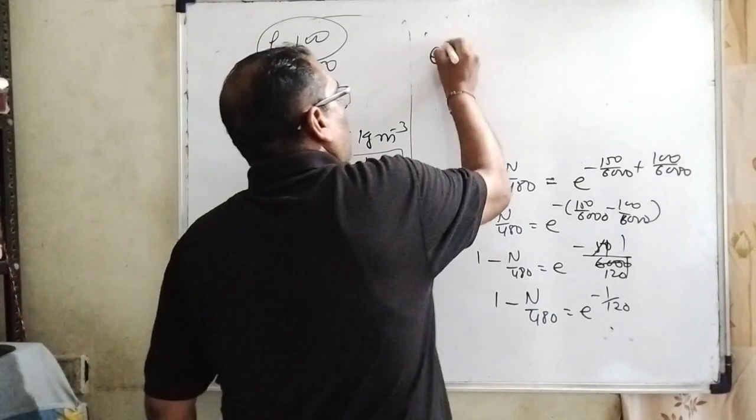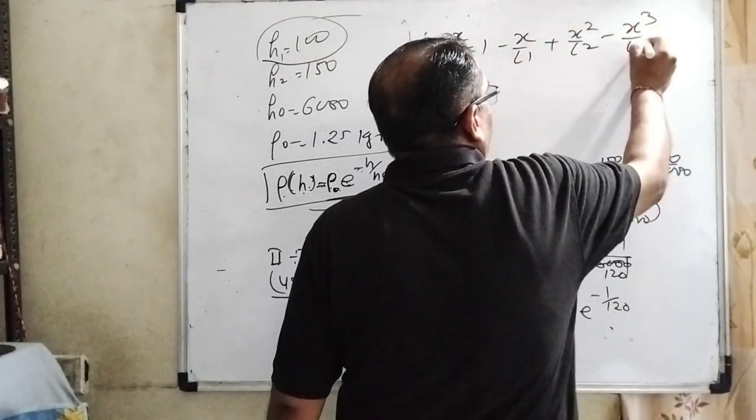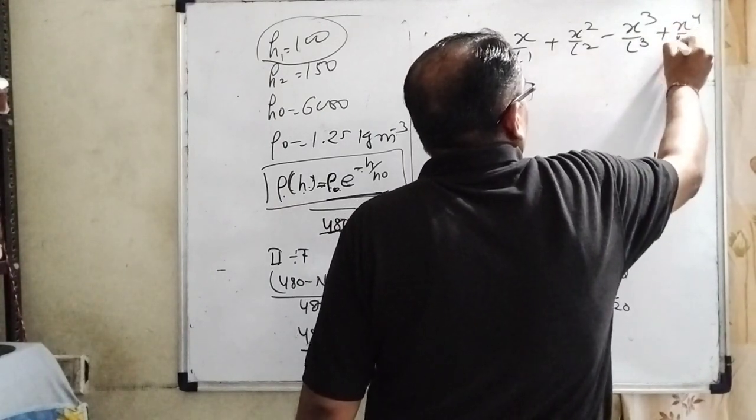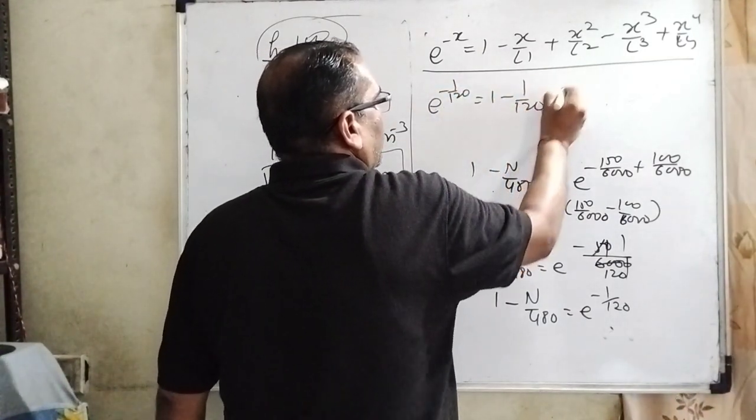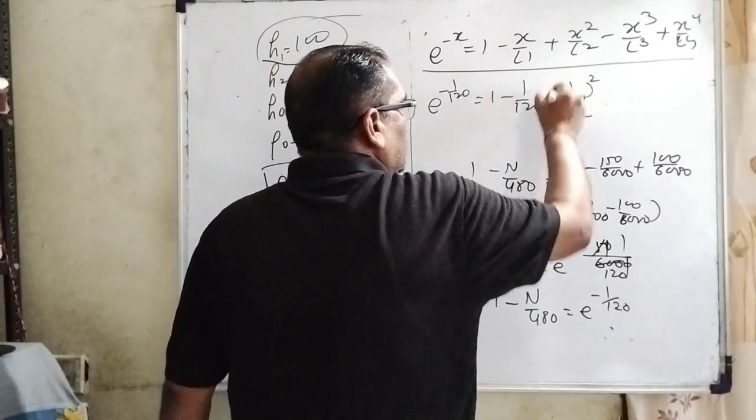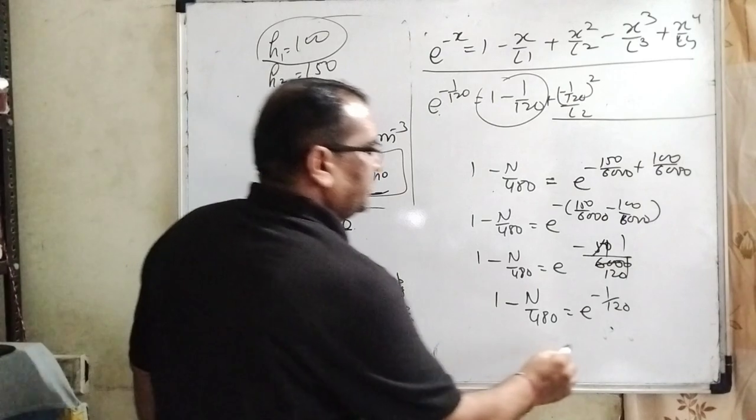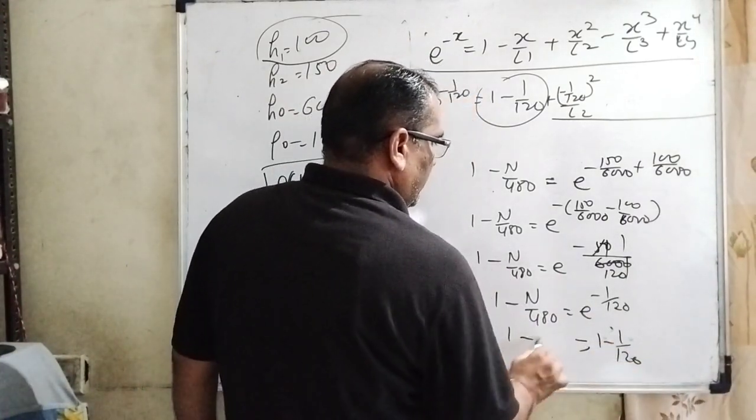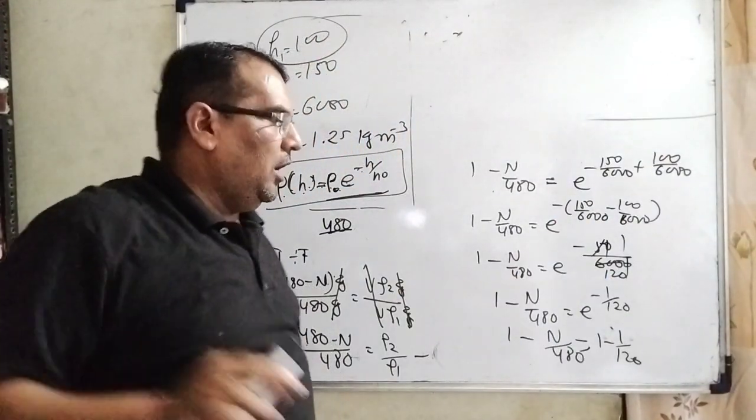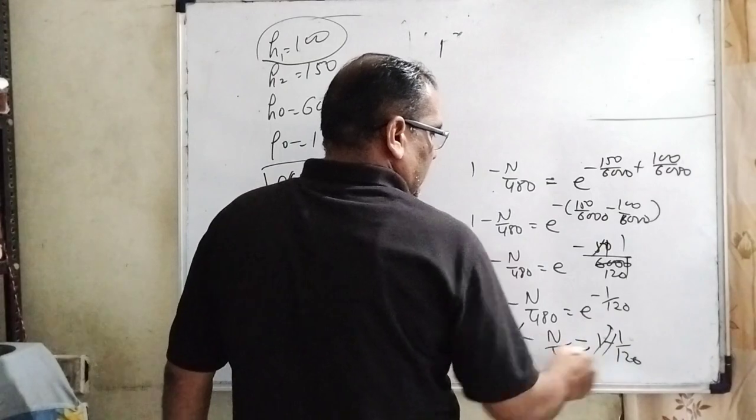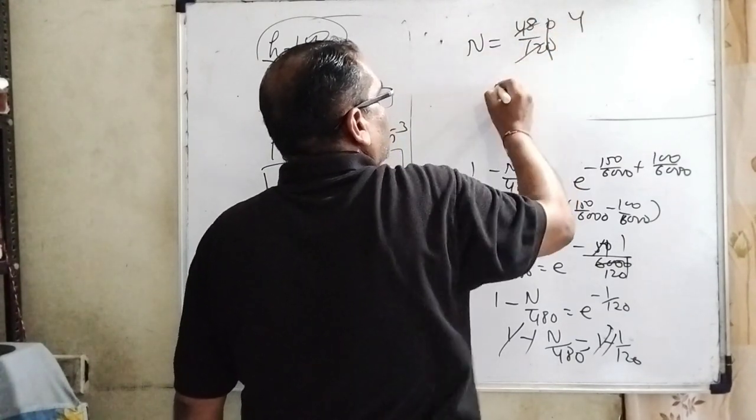Now using the exponential series: e^(-x) = 1 - x/1! + x²/2! - x³/3! + ... For small x, higher order terms can be neglected. So e^(-1/120) ≈ 1 - 1/120. Therefore, 1 - n/480 = 1 - 1/120. The 1s cancel, and n/480 = 1/120. Solving: n = 480/120 = 4. So n = 4.